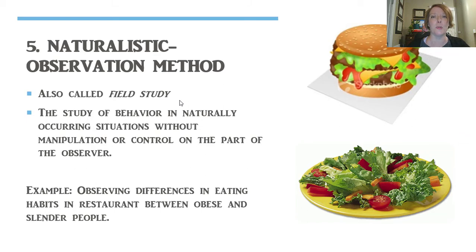The naturalistic observation method is also called a field study, and this is where a researcher looks at behavior where the participant is usually found. You're going into their place. If you've ever been in a classroom where the teacher is being observed, the administrator comes into the classroom and observes the teacher in their natural habitat. The important part about a field study is you don't want to manipulate or control any of the environment — you want it to be as natural as possible.